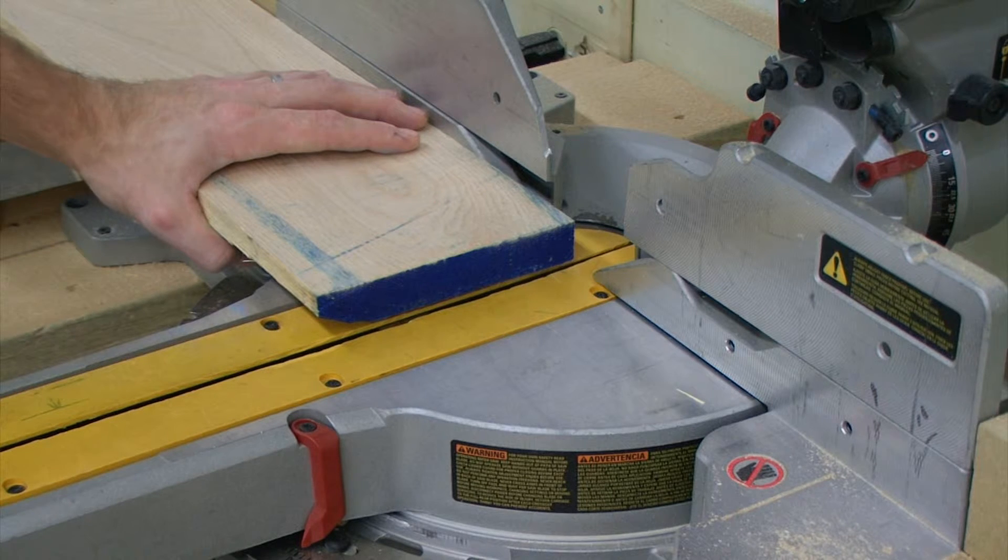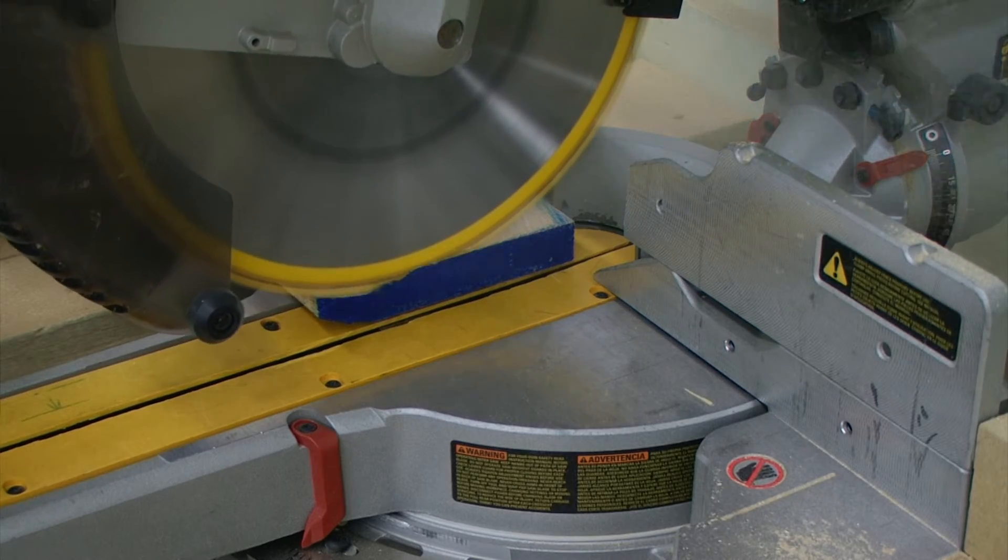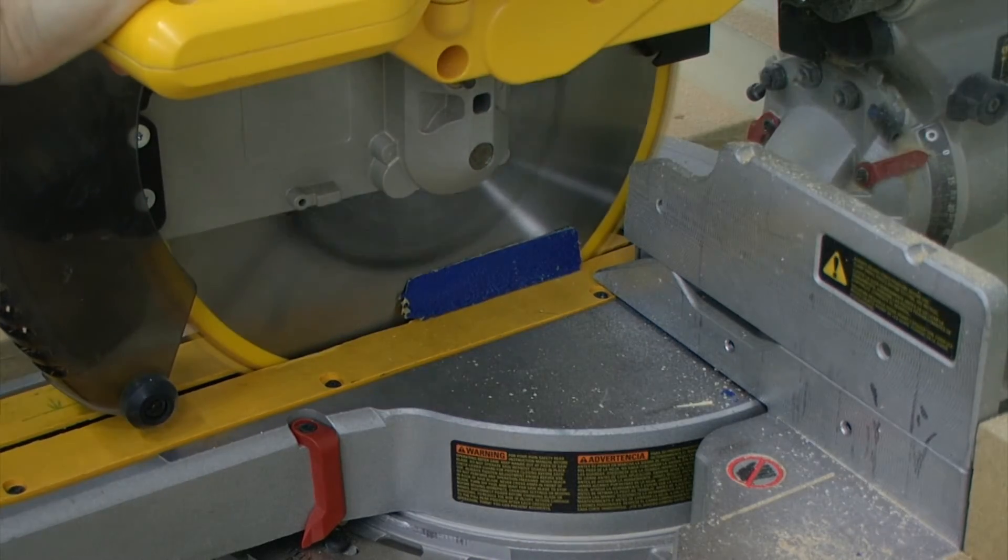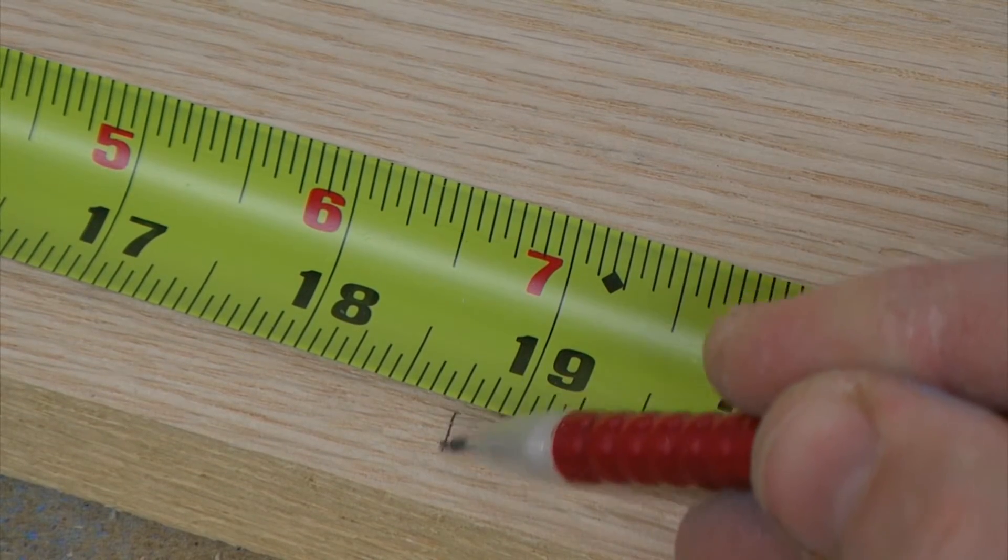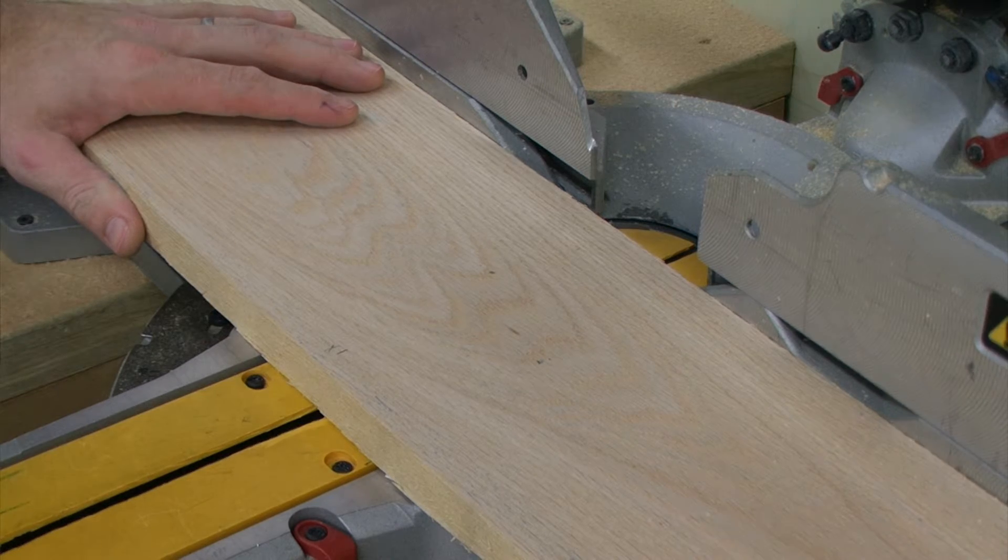First we need to square up one end of the board. Measure 18 and 3/4 and cut that to our oversized length.